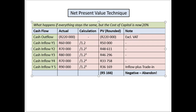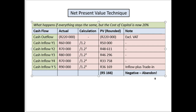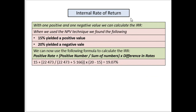Now we redo the calculations. The present values are a little less at 20%, while the negative (cash outflow) stays the same. When you add them up, you get a negative NPV. If the value is negative, you abandon the investment because it's not meeting your expectations. But now we can calculate the internal rate of return, because we had one positive value at 15% and one negative value at 20%.